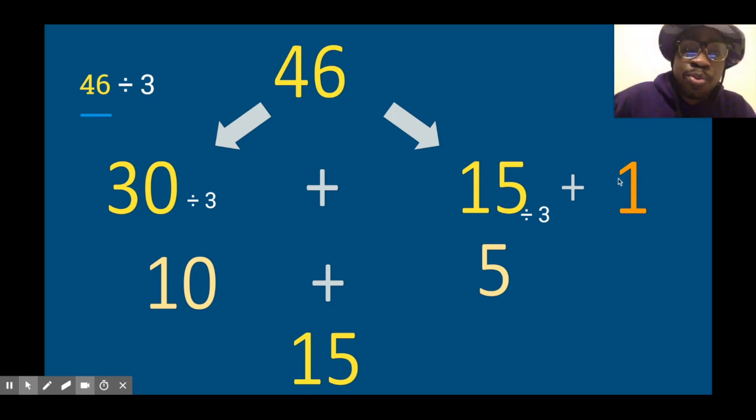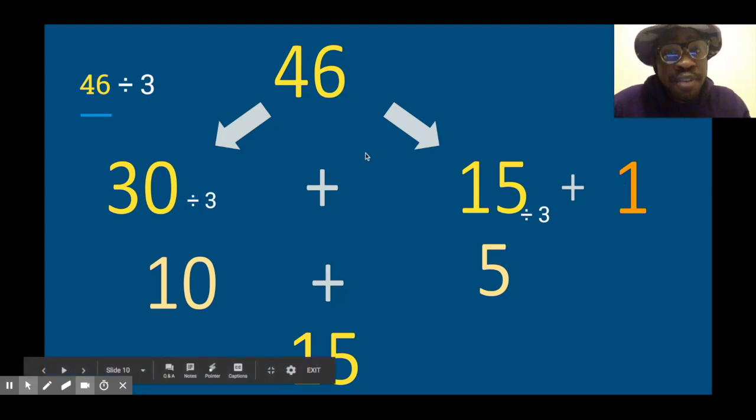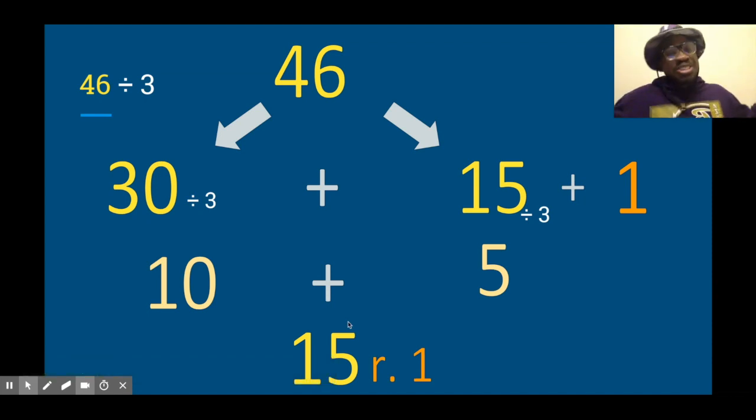Now, our answer is not 15, because remember this one from before? We had an extra one that we did not use. 15 times 3 is 45, not 46, but we still had that one. So it's not 15, but 15 with a remainder of 1. Let's go!